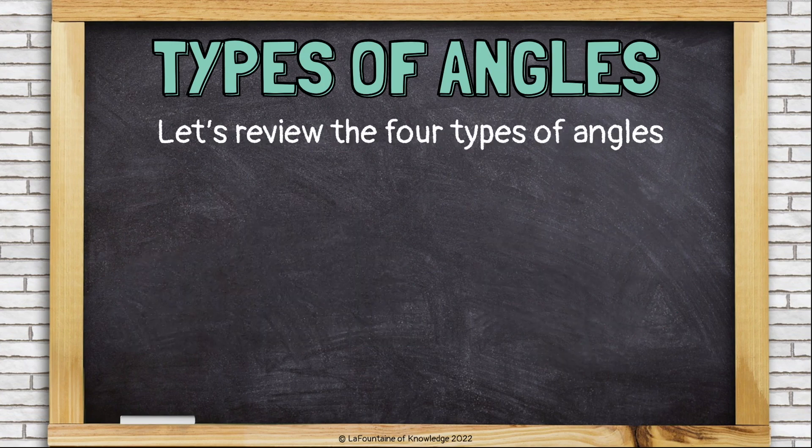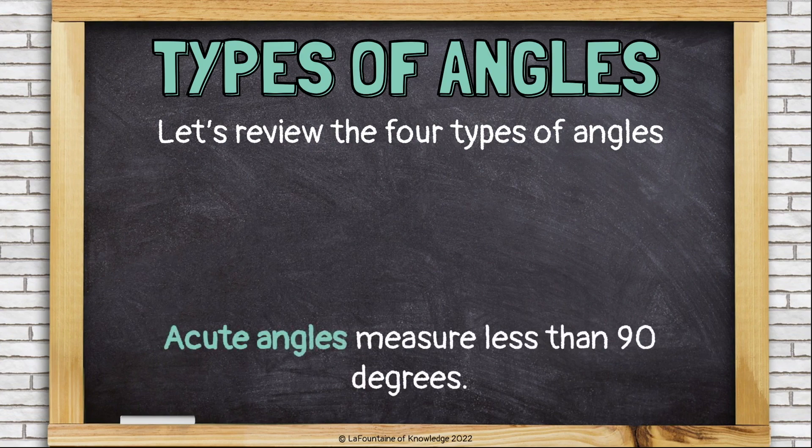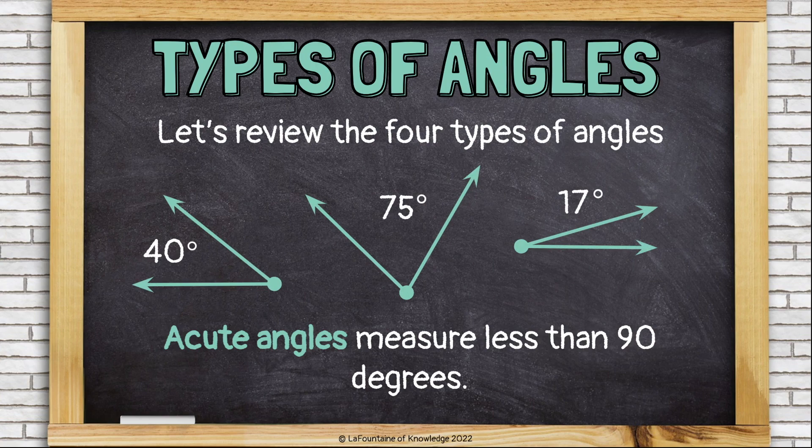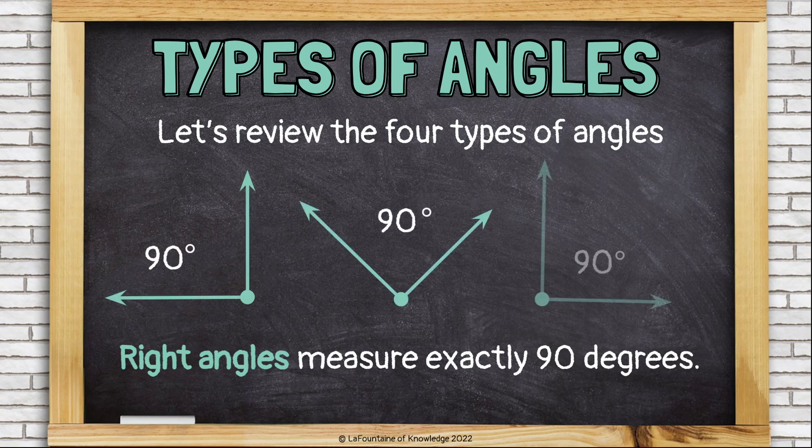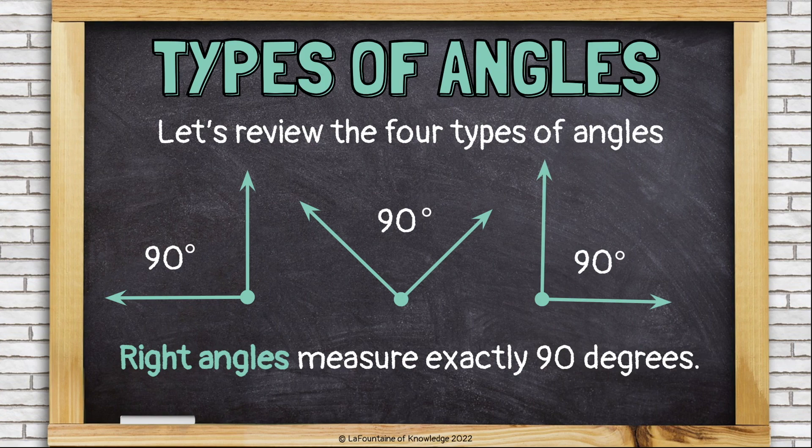Let's review the four types of angles. Acute angles measure less than 90 degrees. These are all acute angles. Right angles measure exactly 90 degrees, and it doesn't matter which way it's facing or pointed. As long as that corner measures 90 degrees, it's a right angle.